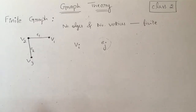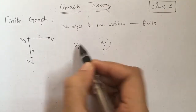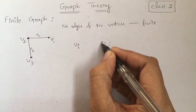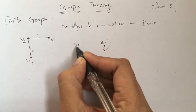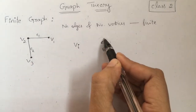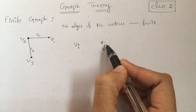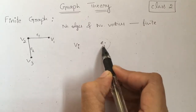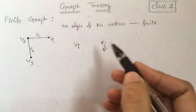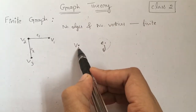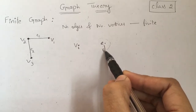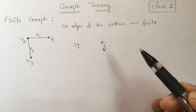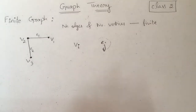Next, in general, if I take any vertex v1 and an edge e1: if vertex v1 is an end vertex of edge e1, then we call v1 and e1 incident to each other. In general, any vertex vi that is an end vertex of some edge ej means vi and ej are incident to each other.